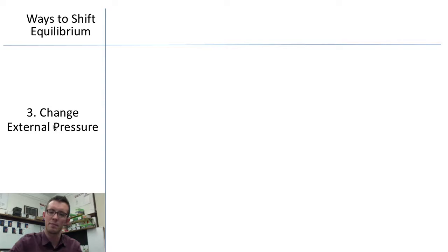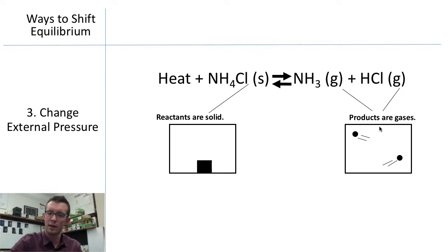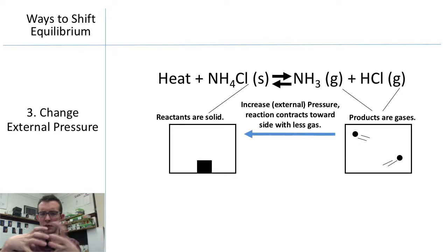And the last way to move a reaction either forward or backwards is to change the external pressure on the system. So in our reaction, because our reactants are solid and our products are gases, if we were to increase the external pressure on this reaction, we'd end up with more reactants.